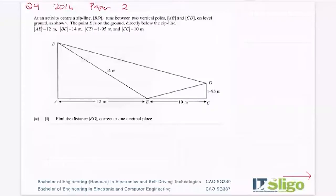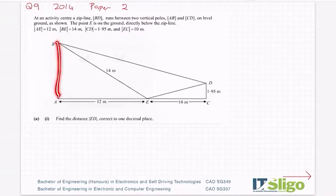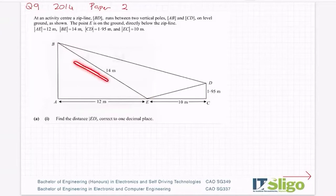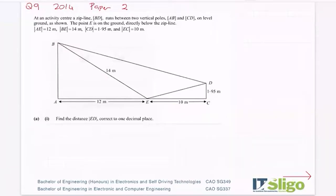Okay, question 9, 2014. At an activity centre, a zip line BD runs between two vertical poles AB and CD on level ground, as shown. The point E is on the ground directly below the zip line. AE is 12, BE is 14, CD is 1.95, EC is 10. I love when they have a diagram drawn for us.